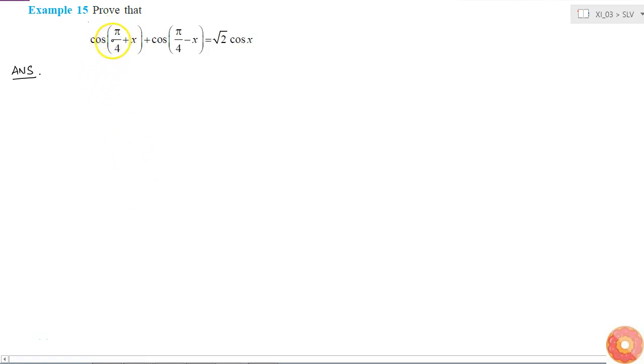Here we have to prove that cos 5 by 4 plus x plus cos 5 by 4 minus x is equal to root 2 into cos x. I know the value of cos 5 by 4 and I also know the value of sin 5 by 4.